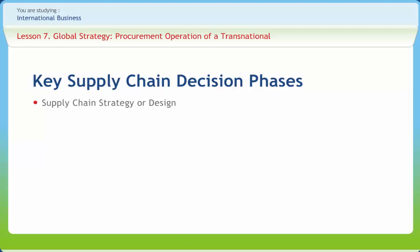Supply chain decisions has three phases, depending on the frequency of each decision and the time frame during which a decision phase has an impact. The first one is supply chain strategy or design phase, during which, given the marketing and pricing plans for a product, a company decides how to structure the supply chain over the next several years. The second phase is supply chain planning.